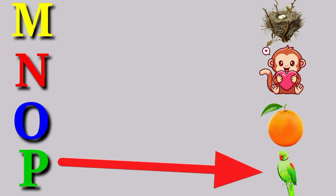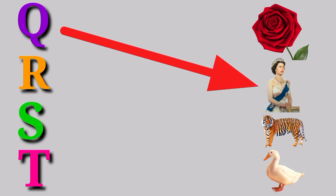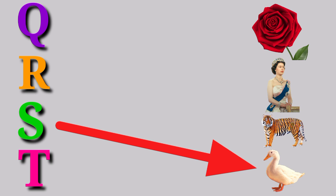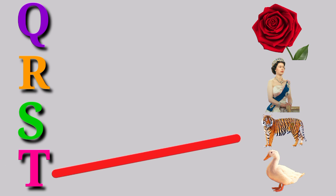P for Parrot, P for Parrot. Q for Queen, Q for Queen. R for Rose, R for Rose. S for Swan, S for Swan. T for Tiger, T for Tiger.